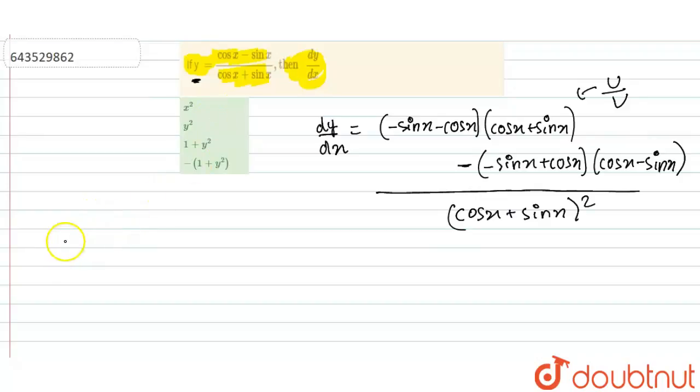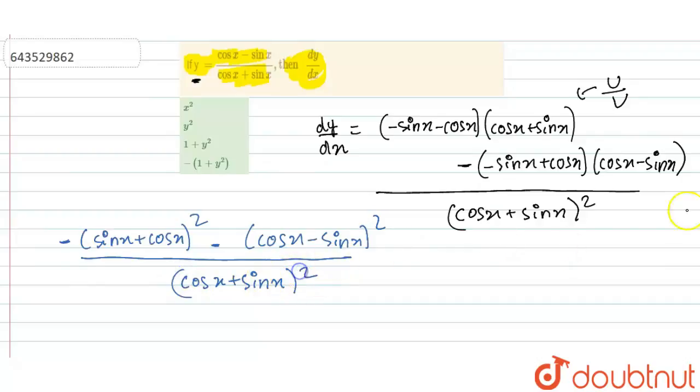take this minus common, which will be sin x plus cos x whole square minus cos x minus sin x whole square.